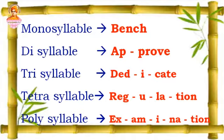Then, polysyllable. A word that has more than four syllables is called a polysyllable. Example: examination — ex-am-i-na-tion. Here I can hear five vowel sounds. So it is a polysyllabic word.